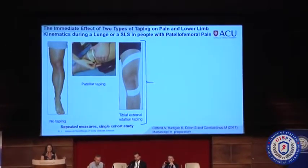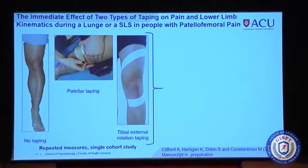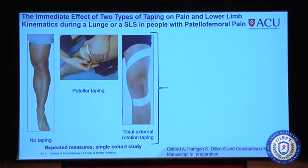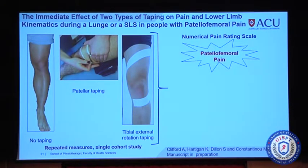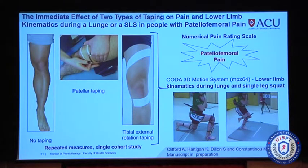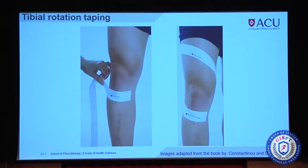This is a study I was part of at the University of Limerick, looking at the immediate effect of two types of taping on pain and lower limb kinematics during a lunge or single leg test in people with patellofemoral pain — I'd like to acknowledge Amanda Clifford and her students for this study. We looked at three conditions: no taping, McConnell patellar taping, and tibial external rotation taping. It was a repeated measures single cohort study. We measured the numerical pain rating scale and 3D kinematics during a lunge and single leg squat. The tibial rotation taping is one of the Mulligan techniques, applied with rotation and an external rotation glide on the tibia simultaneously.